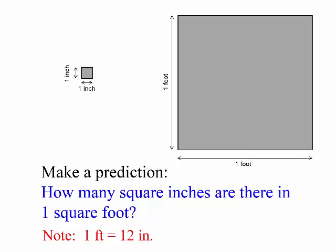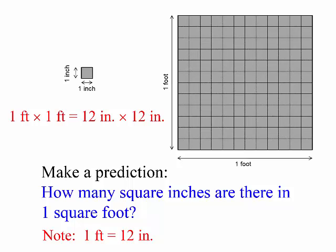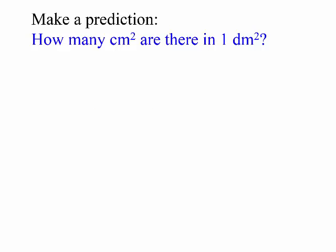Let's see. One foot by one foot is actually equal to 12 inches by 12 inches. Because 12 times 12 is 144, right?